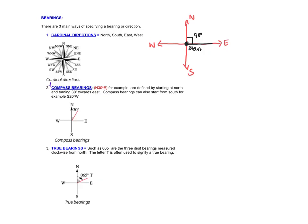Compass bearings always tell you first whether you're in the north or south, and then which way you're swinging from that. For example, N30°E means starting at north and going 30 degrees towards east. Another example: S20°W means starting at the south and going 20 degrees towards west. That's a compass bearing — north or south, then the angle towards east or west.